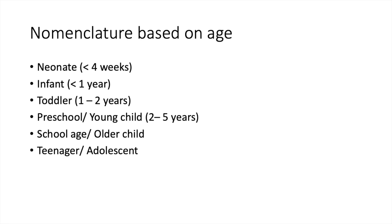Nomenclature based on age: neonates are less than 4 weeks; infants are less than 1 year; toddlers are 1 to 2 years; preschool or young children are 2 to 5 years; school age refers to older children; and then there are teenagers or adolescents.